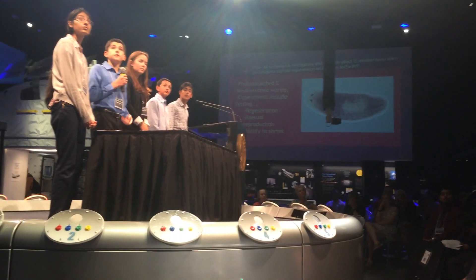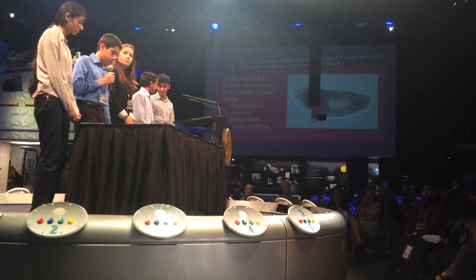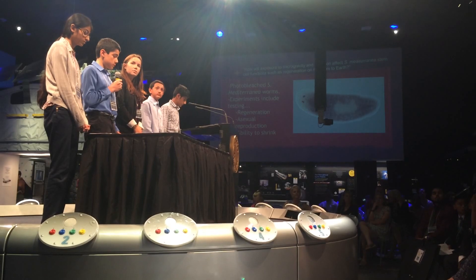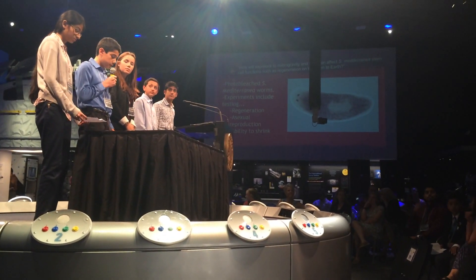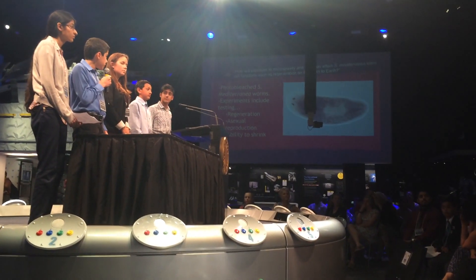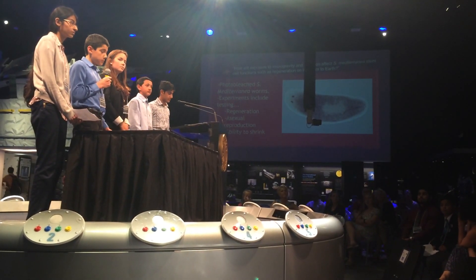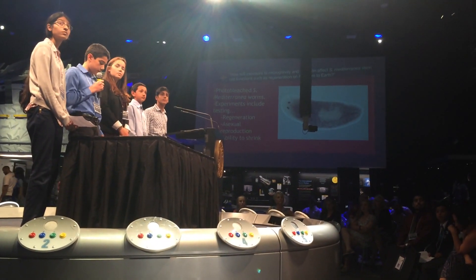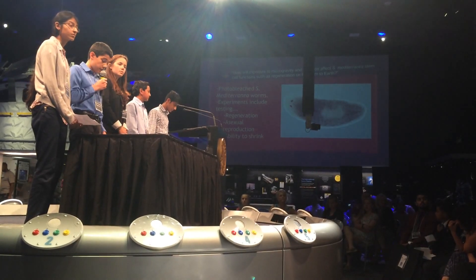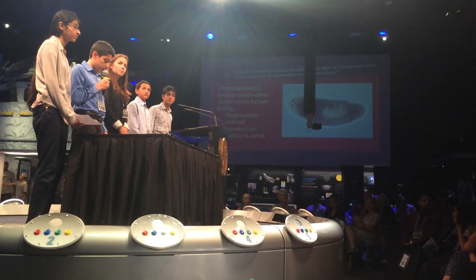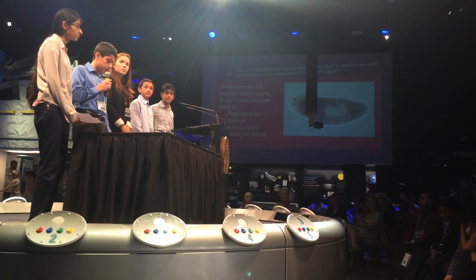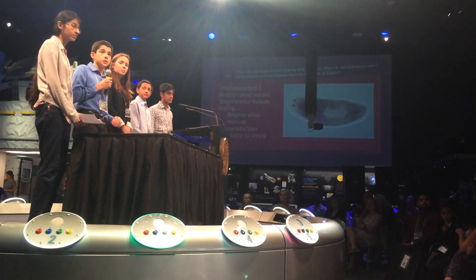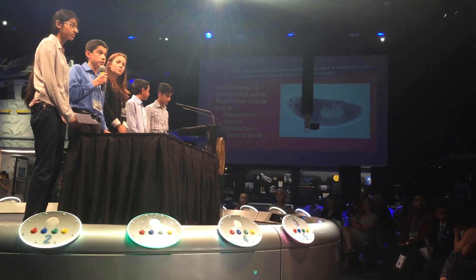In the second volume of the FME will be 15 photobleached S. Mediterranean worms. This photobleaching process harmlessly removes the pigment from the tissue of the organism. One of the natural stem cell-dependent processes of these planaria is constant regeneration of tissue, and because this new tissue will be pigmented, we will be able to compare it to the rest of the organism after its time in microgravity. These worms are also valuable because they can be kept alive for further experimentation on return to Earth, allowing us to see how exposure to microgravity will affect processes such as regeneration and asexual reproduction.